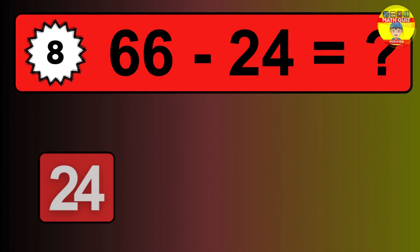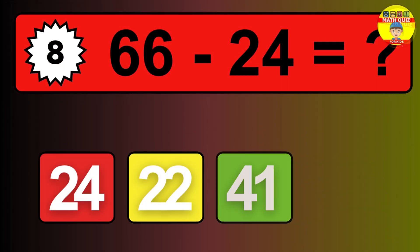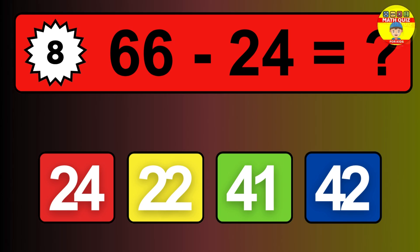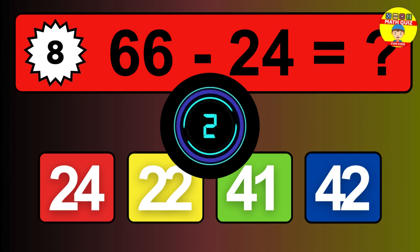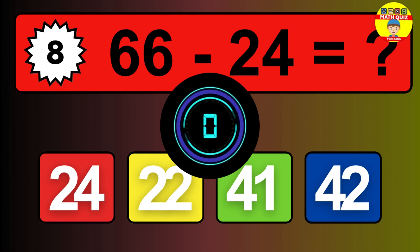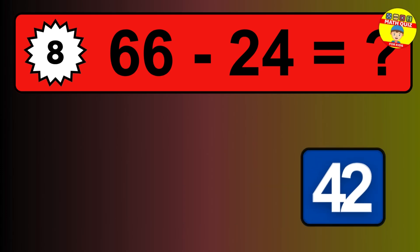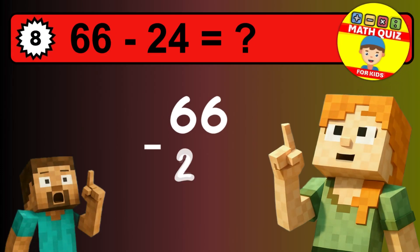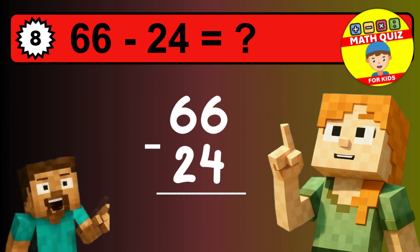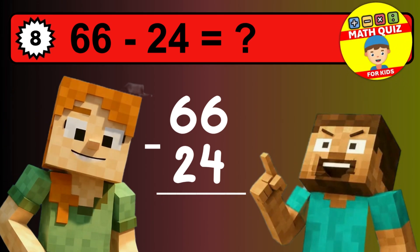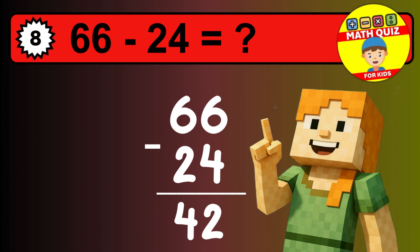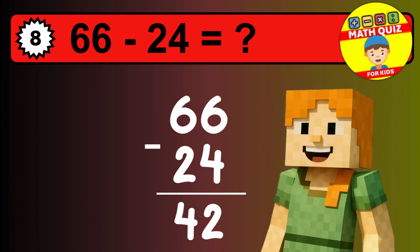What is 66 minus 24? Time to think. Let's solve this step by step. We start with the units: 6 minus 4 is 2. Then we go to the tens: 6 minus 2 is 4. The final answer is 42.